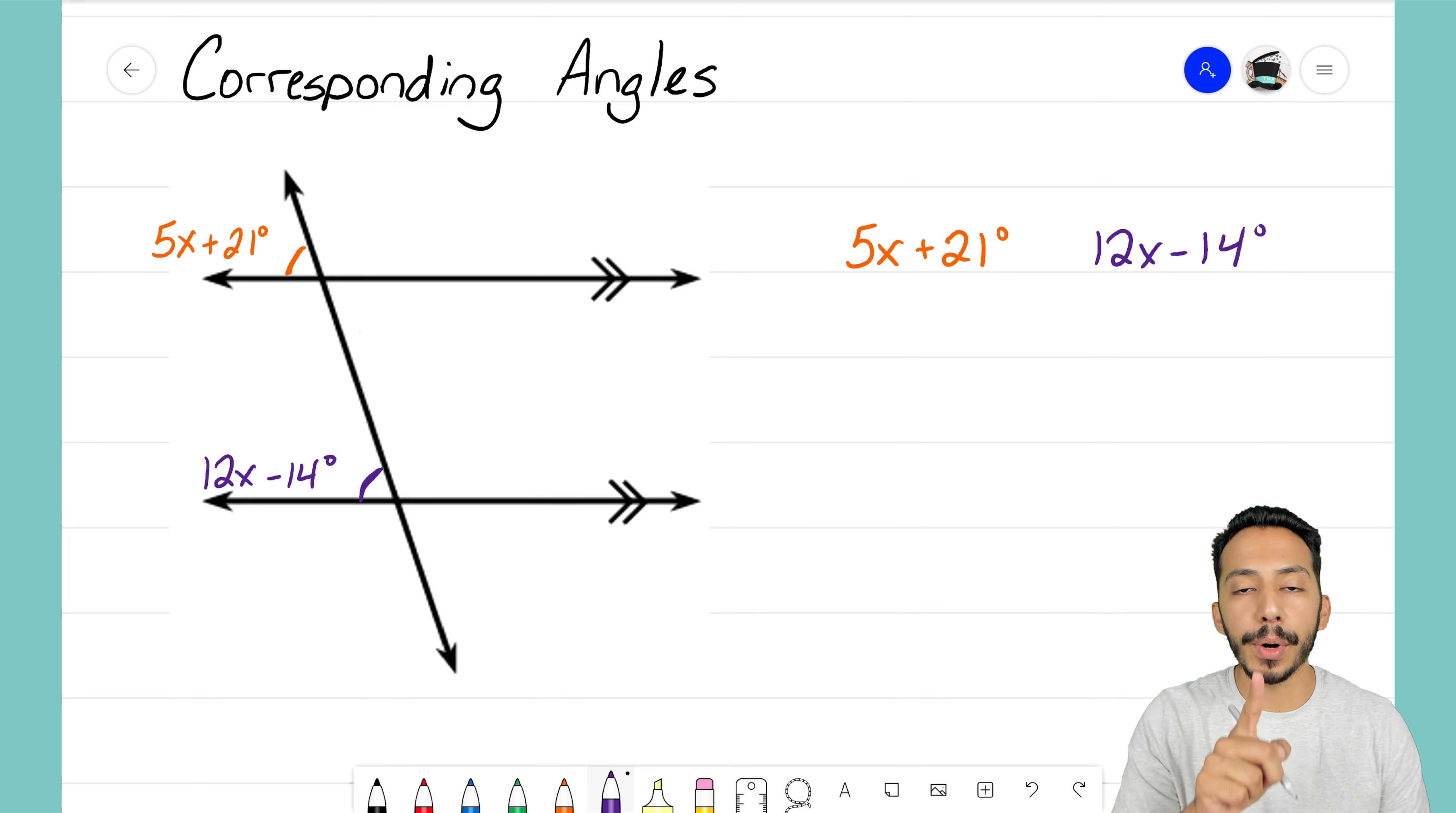Notice that both of those angles are in the same position. What I mean by that is, look at this orange angle here, the 5x plus 21 degrees. It is in the top left position. If we think about these four angles here, it is in the top left position.